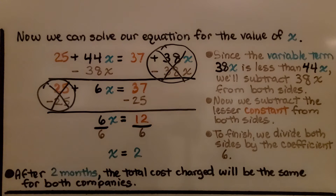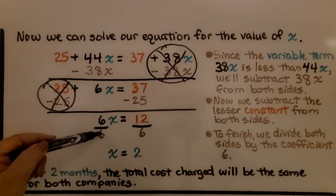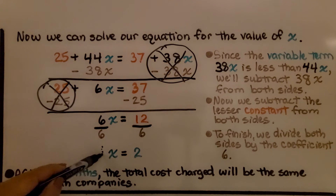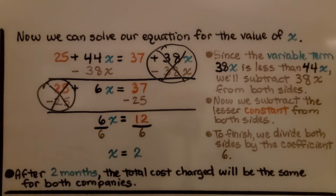The inverse operation of multiplication is division. So to finish, we divide both sides by the coefficient 6. Six divided by 6 is 1, so we end up with 1x — but we don't write that 1, it's an invisible one. On the other side we get 2. That means x is equal to 2. After 2 months, the total cost charged will be the same for both companies.